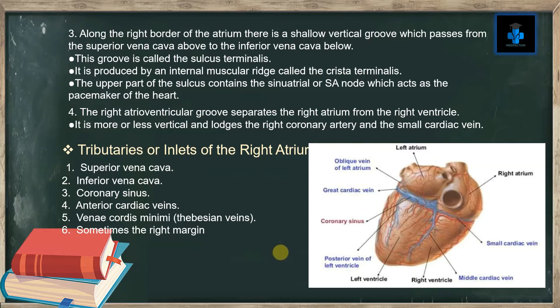External feature number four: the right atrioventricular groove separates the right atrium from the right ventricle. It is more or less vertical and lodges the right coronary artery and the small cardiac vein.